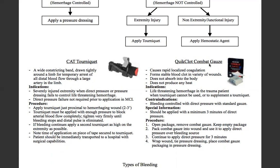Quick Clot causes rapid localized coagulation, forms a stable blood clot in a variety of wounds, does not absorb into the body, and does not produce any heat. It comes in this black package for our EMS providers, and it's Z-folded. Indications: life-threatening hemorrhage in the trauma patient when a tourniquet cannot be used or to supplement a tourniquet. Contraindications: bleeding controlled with direct pressure using standard gauze. Special information: this should be applied with a minimum of three minutes of direct pressure.